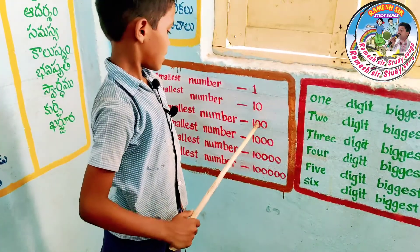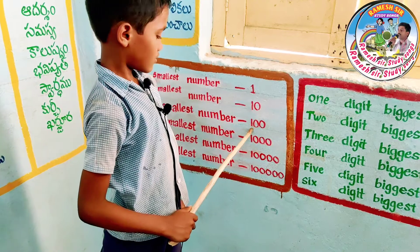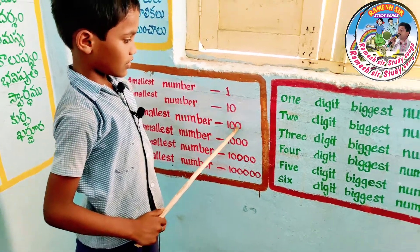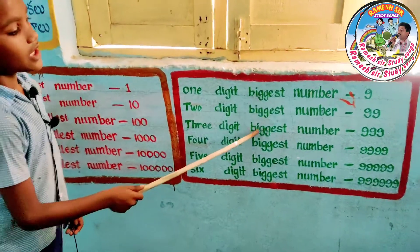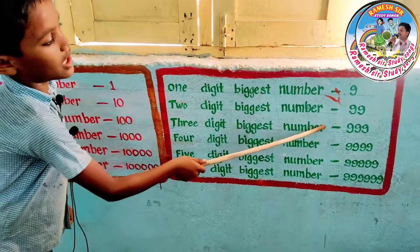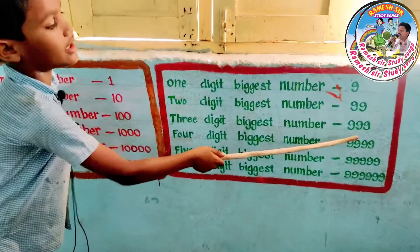Three digits smallest number: hundred. Three digits biggest number: nine hundred and ninety-nine.